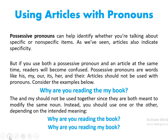Let us understand articles with pronouns. Possessive pronouns like his, my, our, its, her, their can help identify whether you are talking about a specific or non-specific item — just as articles do. But if you use both a possessive pronoun and an article at the same time, readers will become confused. Articles should not be used with pronouns. For example, 'Why are you reading the my book?' is incorrect — 'the' and 'my' should not be used together. Instead, say either 'Why are you reading the book?' or 'Why are you reading my book?'